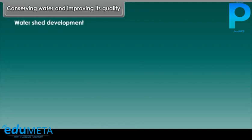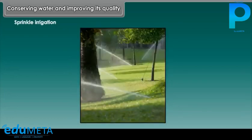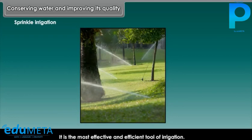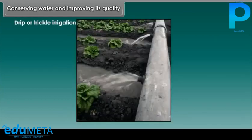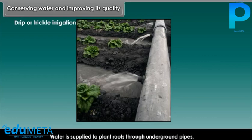Water shed development: a water shed is the basin of a tributary of a main river. Sprinkle irrigation is the most effective and efficient tool of irrigation. Drip or trickle irrigation is another type of irrigation which is used to conserve water; water is supplied to plant roots through underground pipes.